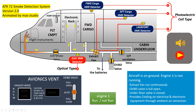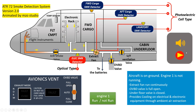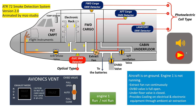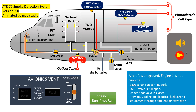The smoke detection system is comprised of four smoke detectors: electric smoke detector, forward cargo smoke detector, aft cargo smoke detector, and lavatory smoke detector. The forward cargo smoke detector, aft cargo smoke detector, and lavatory smoke detector are photoelectric type.